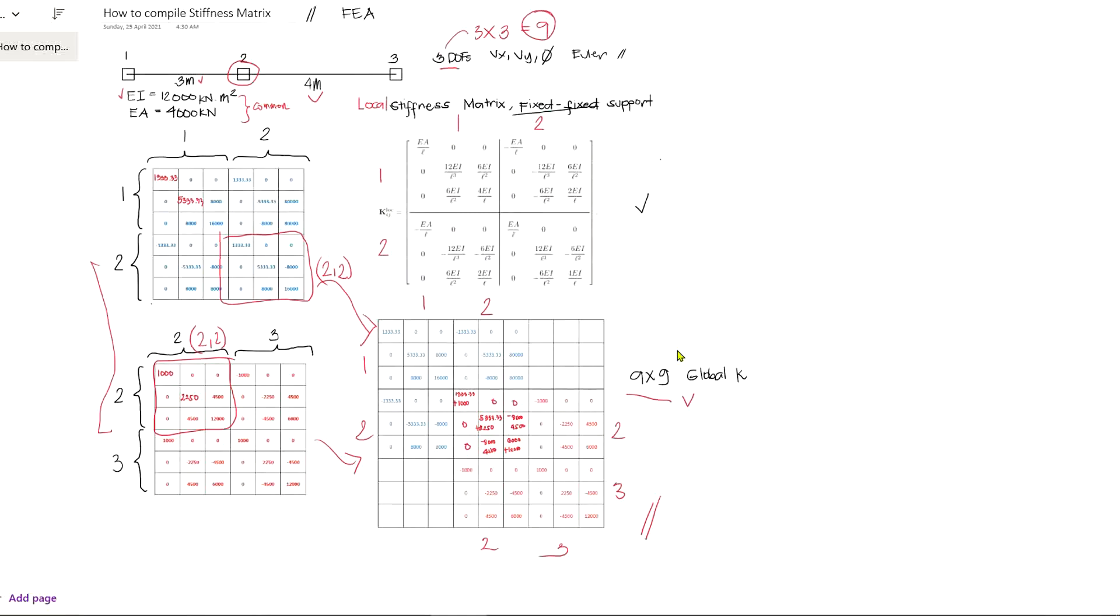Second is you have to evaluate the entries of the local stiffness matrix, and third is you have to perform the compilation as I've shown earlier. Now these can be done manually as we did, but this is only for small structures like two or three element beams. But for bigger structures, you can perform with the aid of computer software like MATLAB, which is really very helpful. I hope you learned something on this video. Comment down below if you have some requests, and please don't forget to subscribe to get an update of upcoming videos.